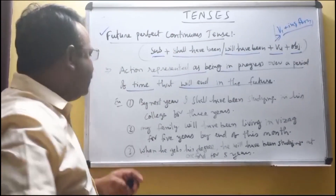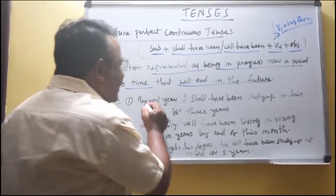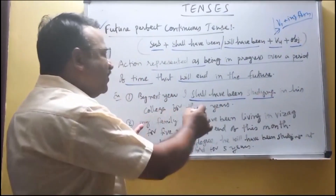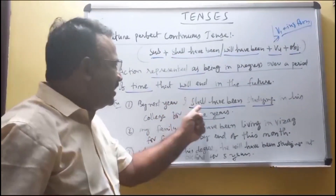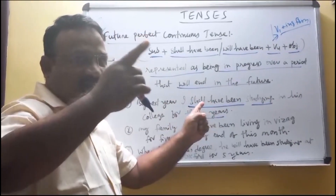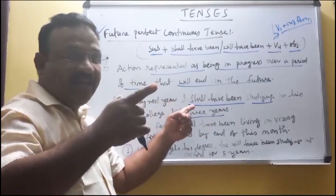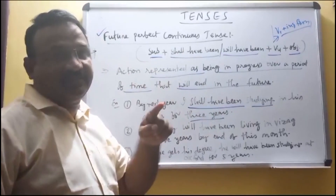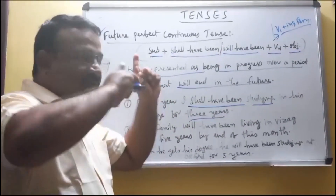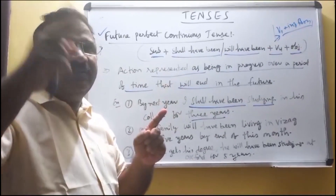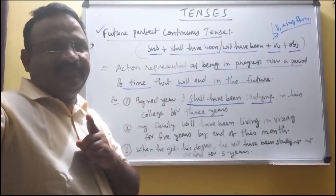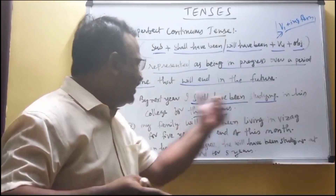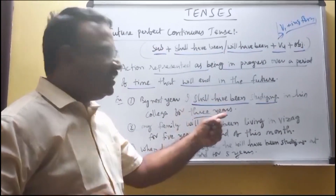Let us see an example: 'By next year, I shall have been studying in his college for three years.' That means by next year, the three years will be completed. So, by next year, I shall have been studying in his college for three years.